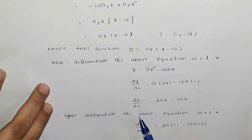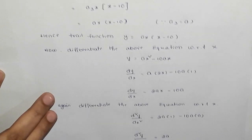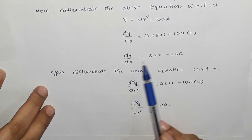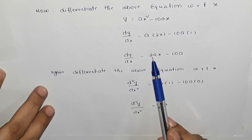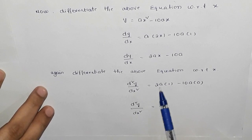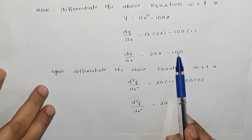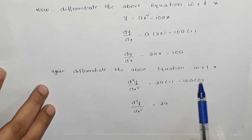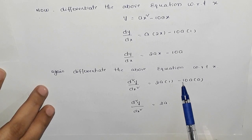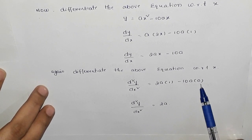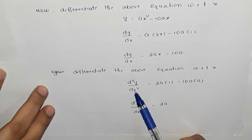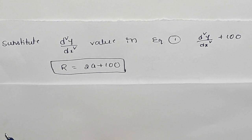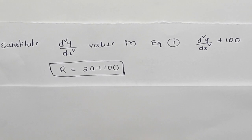Now we find the second derivative. Differentiating dy/dx = 2ax − 10a again with respect to x: d²y/dx² = 2a, since 2a is a constant coefficient of x, giving 2a, and −10a is a constant whose derivative is 0. Therefore d²y/dx² = 2a.